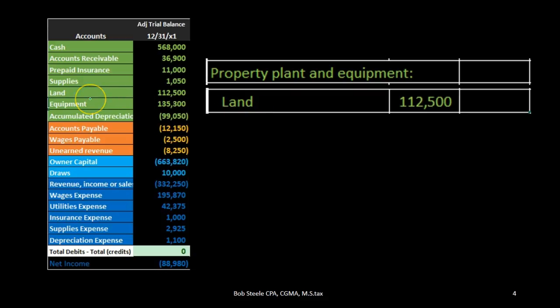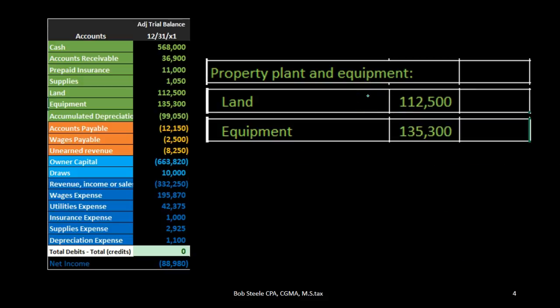We're going to pull in land as the first item. Everything above that was in the prior category, current assets. Note that we are indenting and putting it in the inner column — not because it's a debit, but because we want to list items on the inner column and then sum them up on the outer column when preparing financial statements. We do the same with equipment: list it indented on the inner column, and that number comes straight from the trial balance.